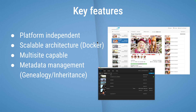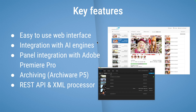The user interface is a web browser interface — very easy to use, not requiring a lot of training to use the full power of Media Loopster. We can connect with AI engines for content analysis, supporting several third-party engines as well as our own AI developments, like a speech-to-text engine that runs on-premise so you don't have to use third-party cloud-based engines. Media Loopster also has a panel integration with Premiere Pro so you can work seamlessly with your favorite editing system.